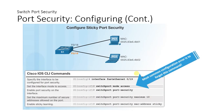For port security configuration, first navigate to the interface you want to secure — for example, FA0/19. Type 'switchport mode access' because it is directly connected to a PC. Then type 'switchport port-security' to enable port security. Use 'switchport port-security maximum 10' to allow only 10 PCs. Use 'switchport port-security mac-address sticky' so that MAC addresses will stick to this port and be remembered automatically.